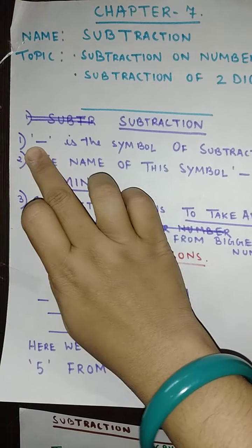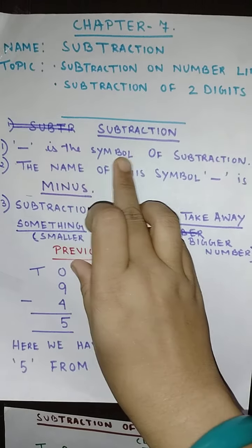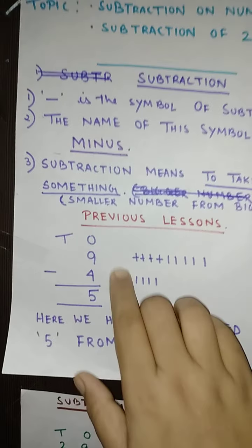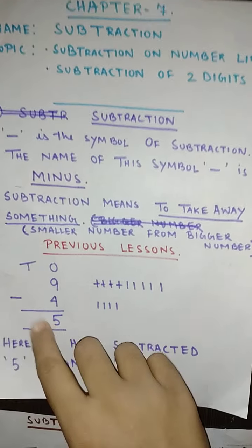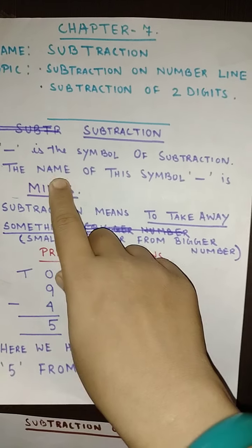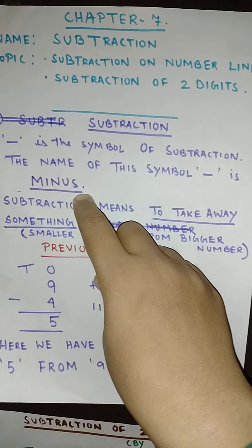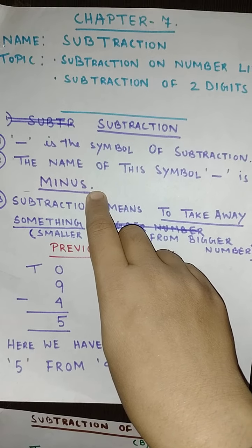So let us start with the word subtraction. Now subtraction, this small dash, this is the symbol of subtraction. Now when we will be doing any subtraction sum you can see that there is this dash and this is the symbol of subtraction. And the name of this symbol is minus, M-I-N-U-S.